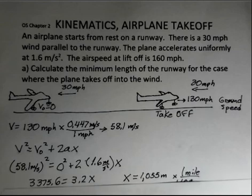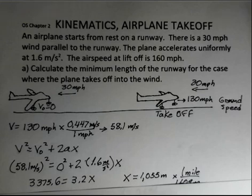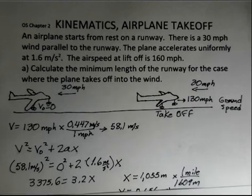And if you square the 58.1, try this on your own calculator, kind of double check my work here. 2 times 1.6 is a factor of 3.2. Divide both sides by 3.2. We find x is 1,055 meters. And to convert that into miles, if you're interested, then 1 mile divided by 1609 is the conversion factor. And I come up with 0.656 miles, about 7 tenths of a mile.